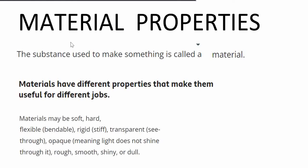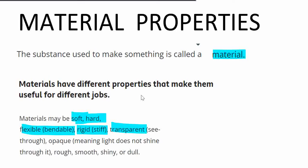Material properties. What is material? The substance used to make something is called material. Materials have different properties that make them useful for different jobs. Material may be soft, hard, flexible, bendable, rigid or stiff, transparent, opaque, rough, smooth, shiny, or dull.